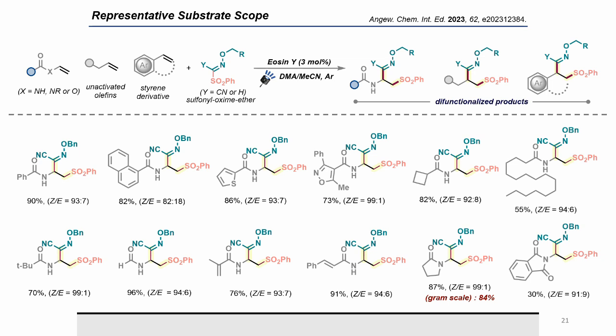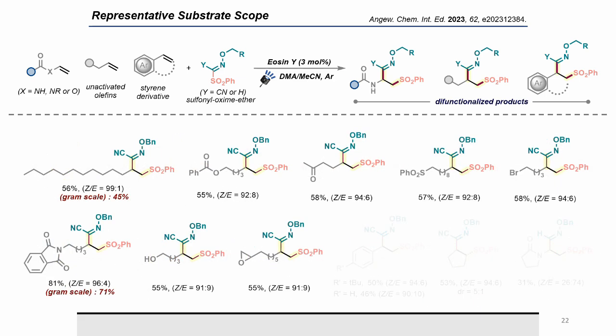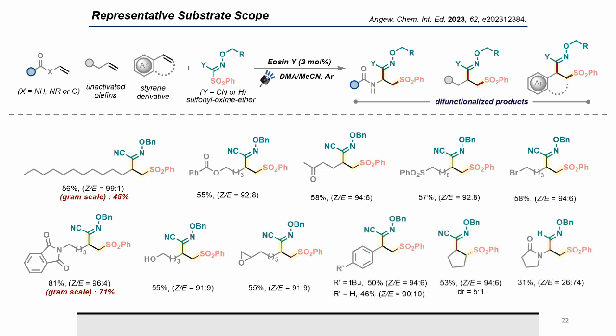Enamides possessing alpha-beta unsaturated carbonyl-derived units were efficiently converted to products, and cyclic enamides are also tolerated. Not only activated alkenes, but unactivated alkenes like 1-dodecene gave good yield and excellent Z:E ratio. Several other functional groups containing alkenes — including esters, ketones, sulfones, bromides, free alcohols, and even epoxides — were smoothly transformed. This method was applicable to styrene derivatives with moderate yields, and although internal alkenes gave disappointing results, difunctionalization of cyclopentene was achieved with excellent yield and trans selectivity.